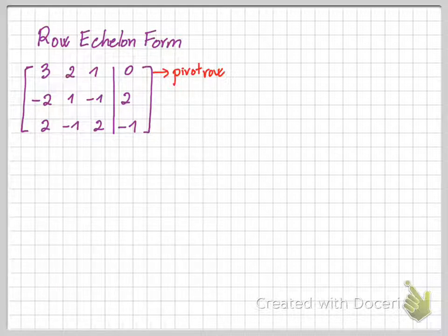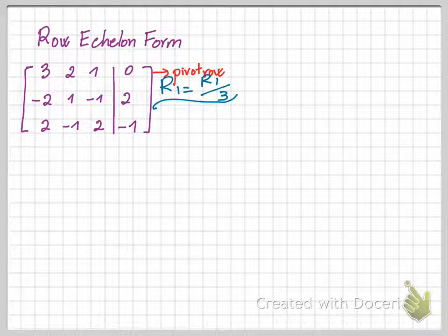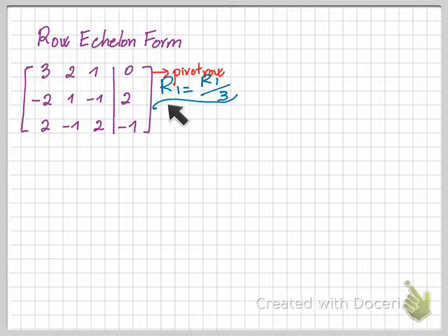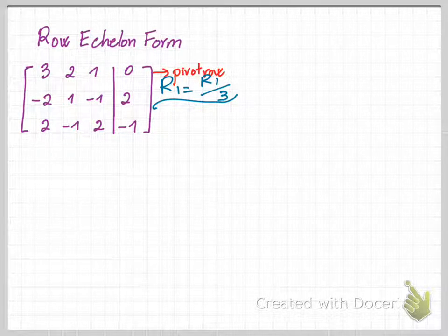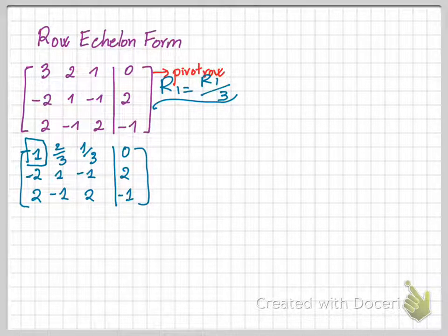Then we have to look at the leading coefficient of the first row to see if it's 1 or not. If it's not 1, then you have to do an operation that makes this 3 here to be 1. So we're gonna use the operation by transforming R1, the first row, by taking the first row divided by 3, and then you're achieving the next equivalent matrix.